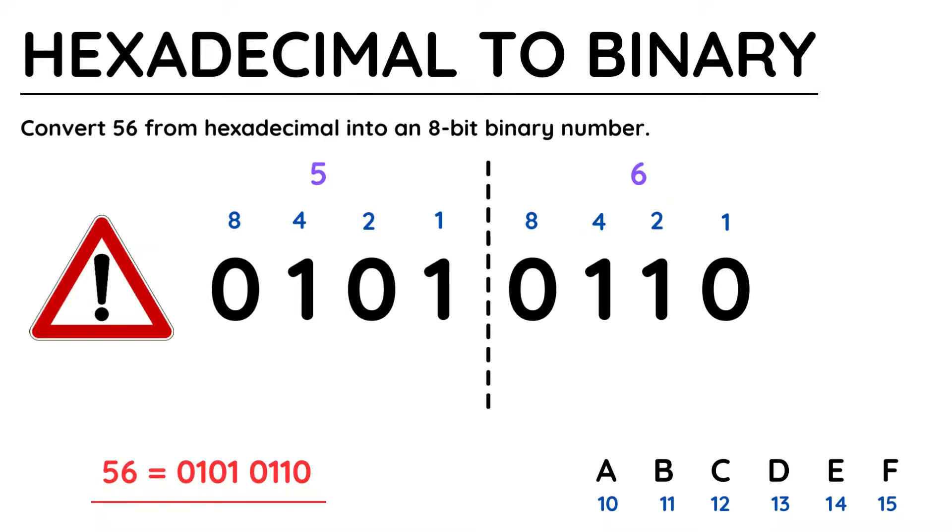Just a really important note, a hexadecimal value doesn't necessarily need to have a letter in it. In this example, 5, 6 is being converted into binary, not 56, so read the exam question carefully to understand which number system you are being asked to use.